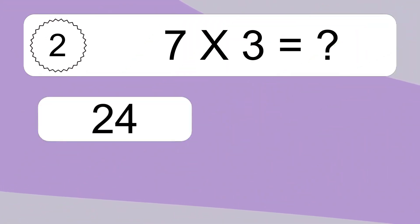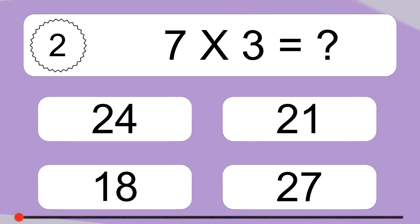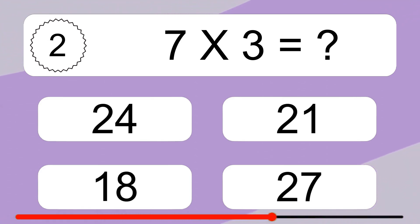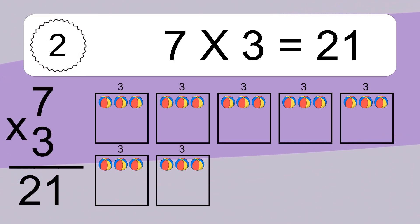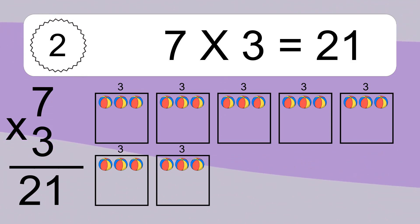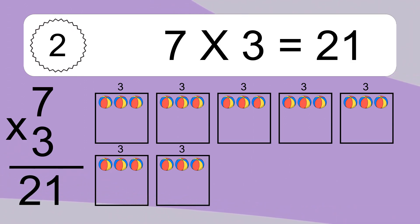7 times 3 equals what? 7 times 3 equals 21. We have 7 boxes, and each box has 3 colorful balls inside. If you count all the balls in all the boxes together, you will have 7 times 3 balls. This equals 21 balls.